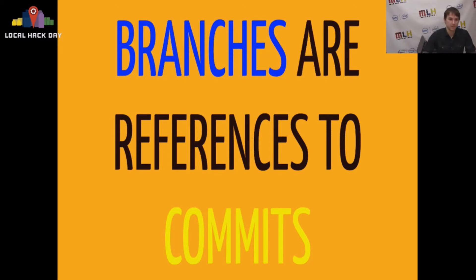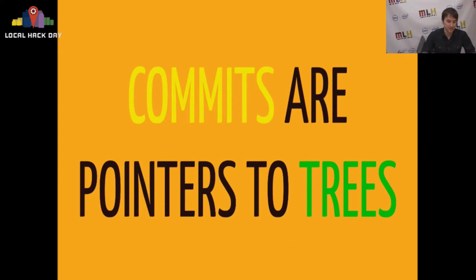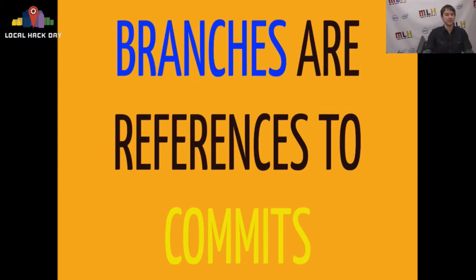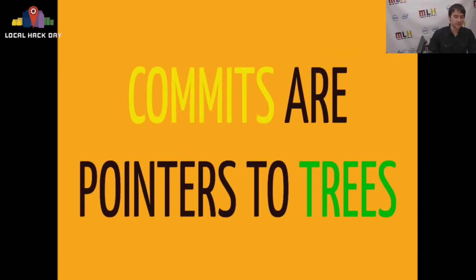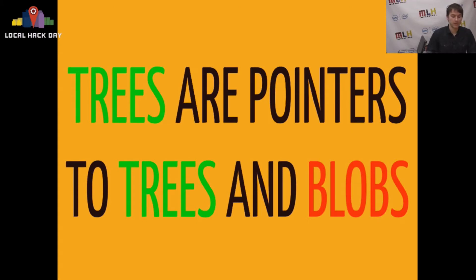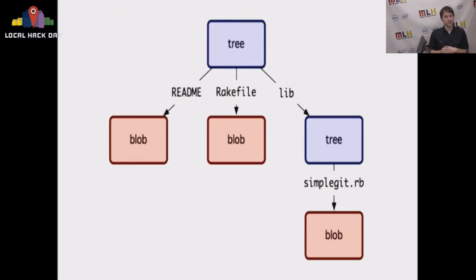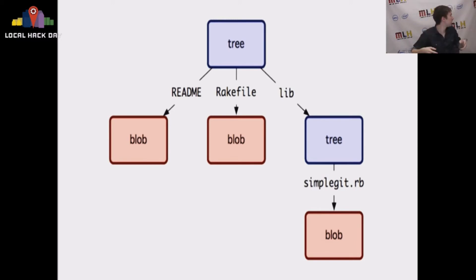Branches are references to commits. Commits are pointers to trees. Trees are pointers to trees and blobs. Let's go through that one more time: branches point to commits, commits point to trees, and trees are pointers to other trees and blobs. And blobs are just zlib-compressed files. The tree at the top is just the directory listing, then you have the blobs — readme, readfile, everything like that — and then you have another tree and another blob.